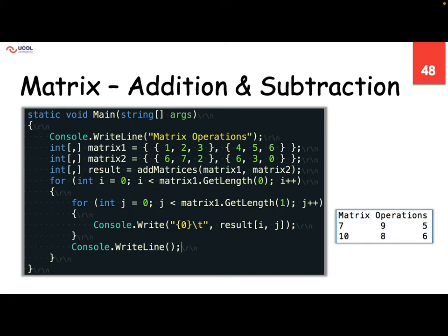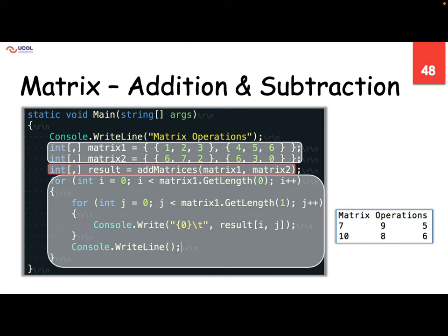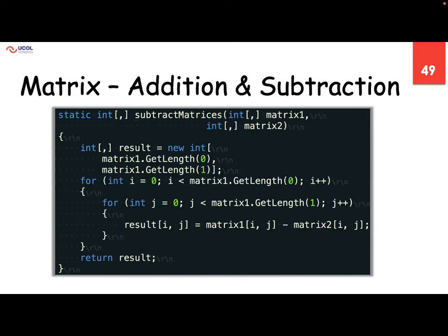In the main method, we define matrixOne and matrixTwo as two-dimensional arrays, then call the AddMatrices method with those as input. When printing the result matrix we again need nested loops. For subtraction it is exactly the same — instead of a plus sign we use a negative sign, and the rest is exactly the same.